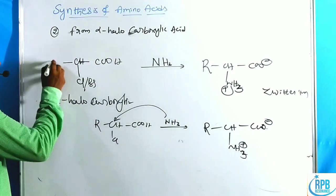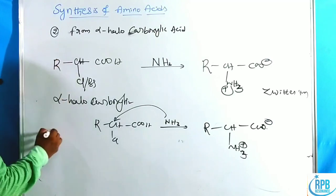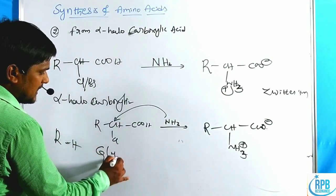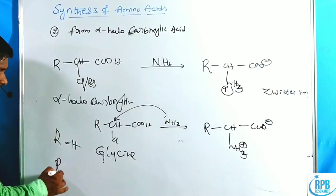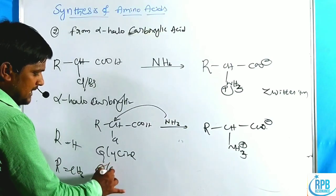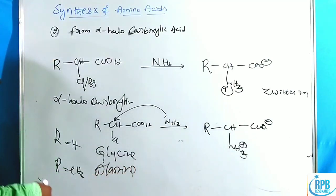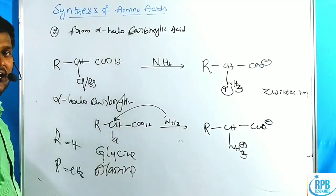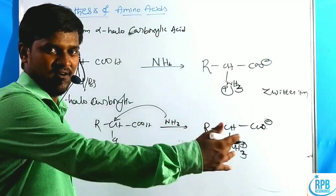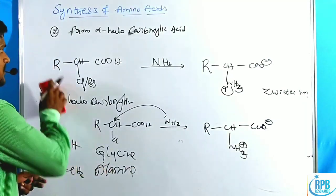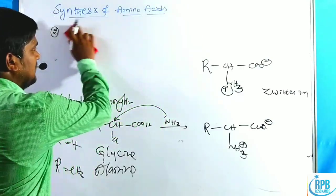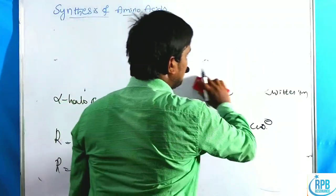Product examples: if R = H, we get glycine; if R = CH₃, we get alanine; if R = isopropyl, we get valine. This is a straightforward method to prepare amino acids.